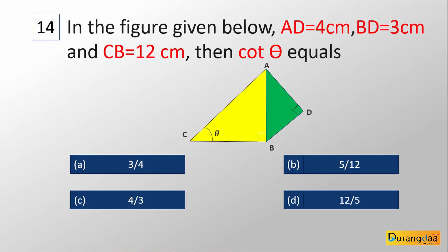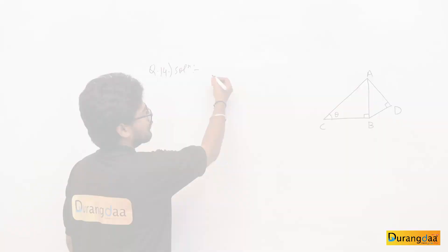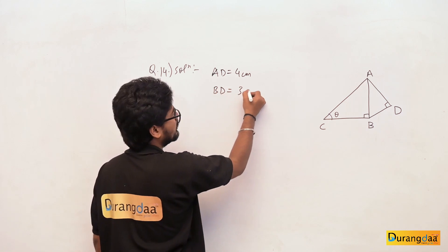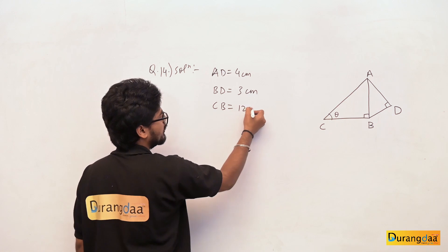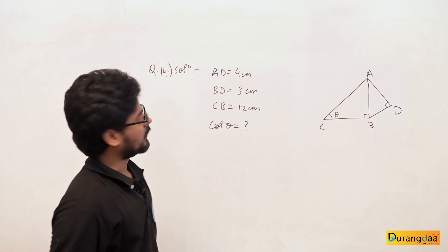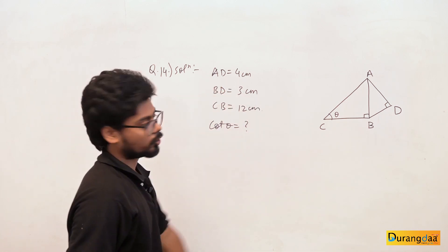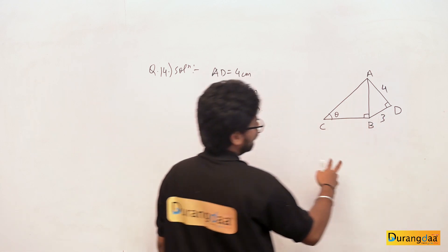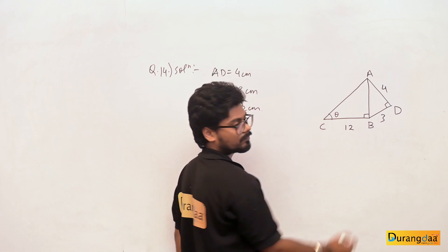Question number 14: In the given figure, AD = 4 cm, BD = 3 cm, and CB = 12 cm. Find cot θ. Options: A: 3/4, B: 5/12, C: 4/3, D: 12/5. AD is 4 cm, BD is 3 cm, and CB is 12 cm.